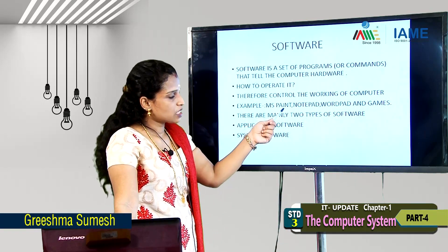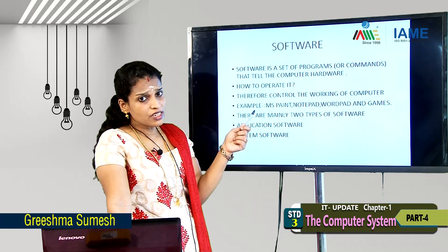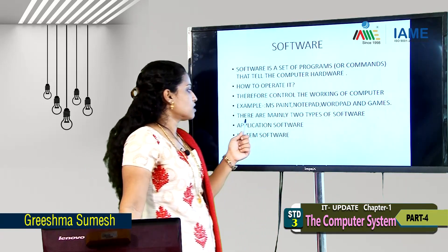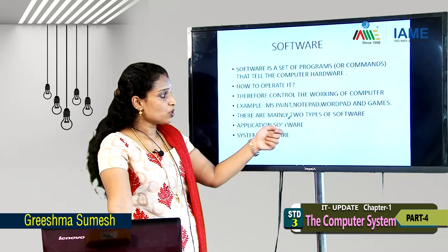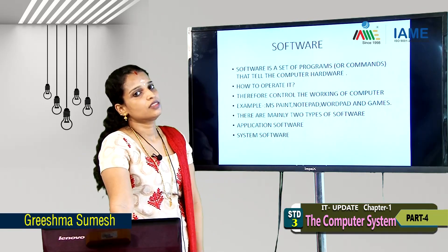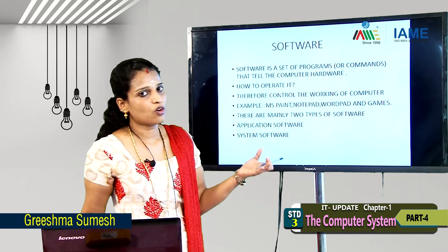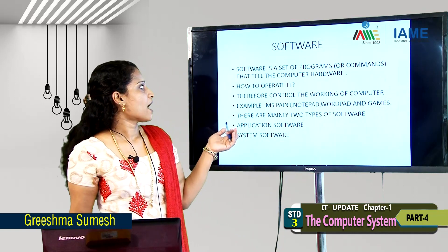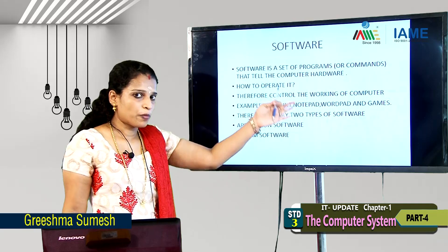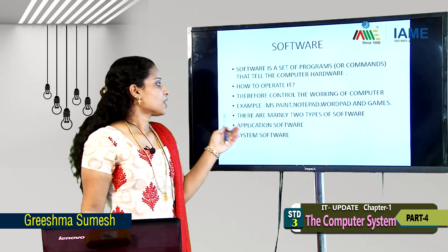Examples of software: MS Paint, Notepad, WordPad, and Games. There are mainly two types of software: application software and system software. Software is a set of programs or commands that tell the computer hardware how to operate it, and therefore controls the working of the computer.